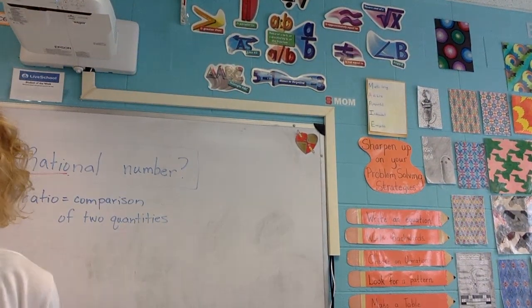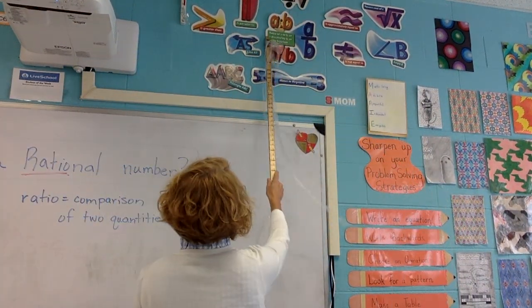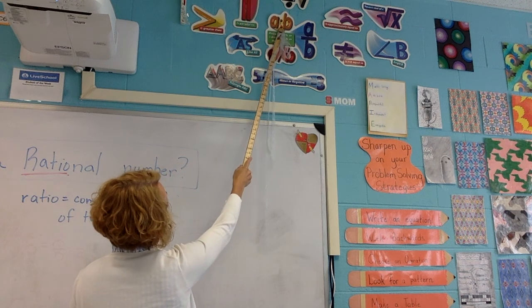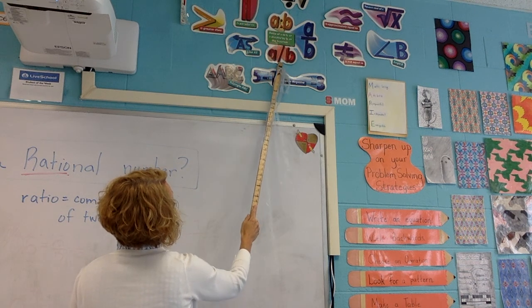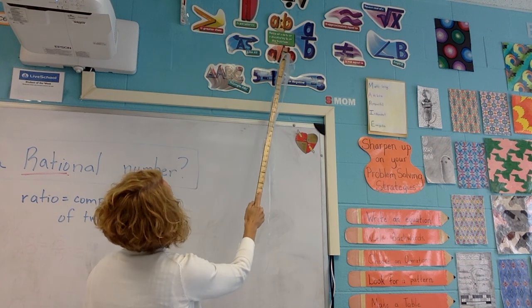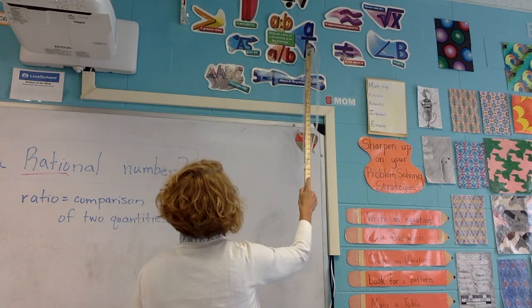Okay, look over here at my poster. How can you write a ratio? Ratio of A to B could be written with a colon or A divided by B, you know where you have a slash, or the fraction A over B.